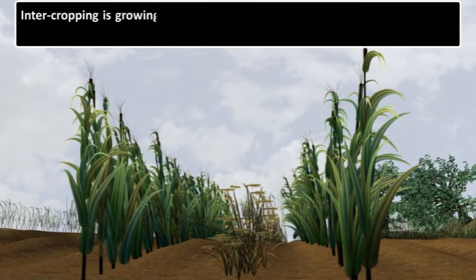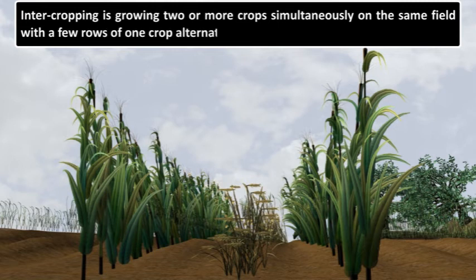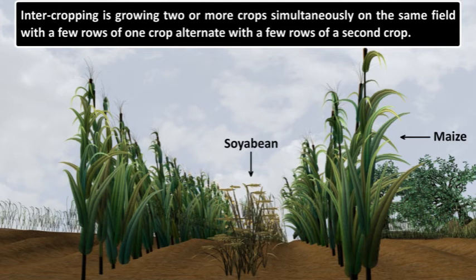Intercropping is growing two or more crops simultaneously on the same field, with a few rows of one crop alternating with a few rows of a second crop. For example, soybean plus maize or finger millet plus cowpea. The crops are selected such that their nutrient requirements are different, ensuring maximum utilization of nutrients supplied and also preventing pests and diseases from spreading from one crop to another.